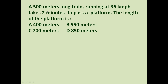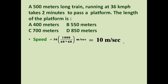So we know the speed of the train is 36 kilometers per hour, the length of the train is 500 meters, and it takes two minutes to pass the platform. Let us convert the speed into meters per second: 36 kilometers per hour means 36 × 1000 meters divided by 3600 seconds, which simplifies to 10 meters per second.